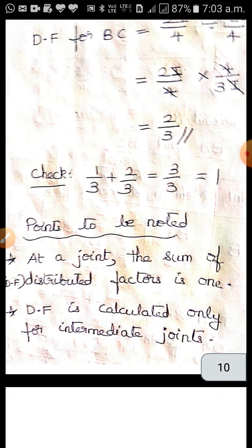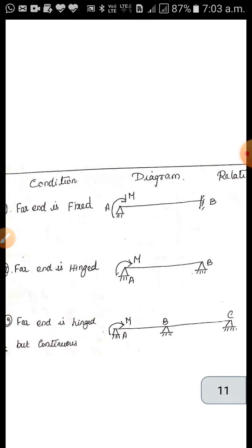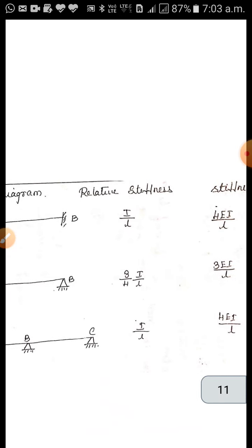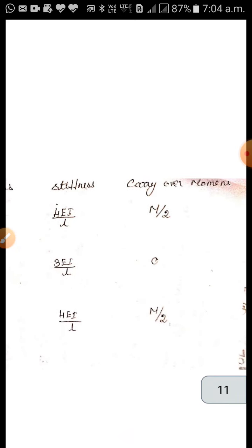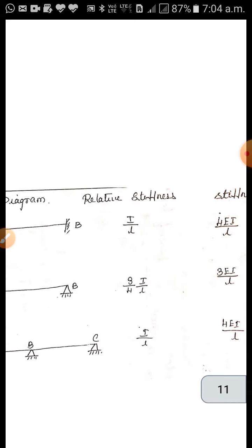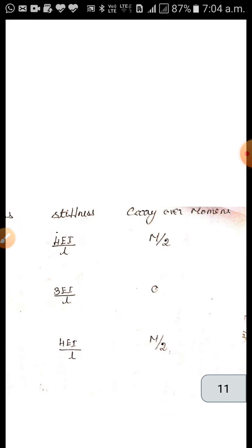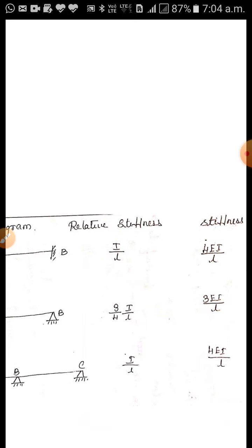Key points: at a joint, the sum of distribution factors is 1, and distribution factors are calculated only for intermediate joints. Summary table: far end fixed → relative stiffness = I/L, carry-over moment = M/2, carry-over factor = 1/2, stiffness = 4EI/L. Far end hinged → relative stiffness = (3/4)(I/L), carry-over moment = 0, carry-over factor = 0. The next class will have a problem, and then we will cover the procedure for the moment distribution method. Thank you.